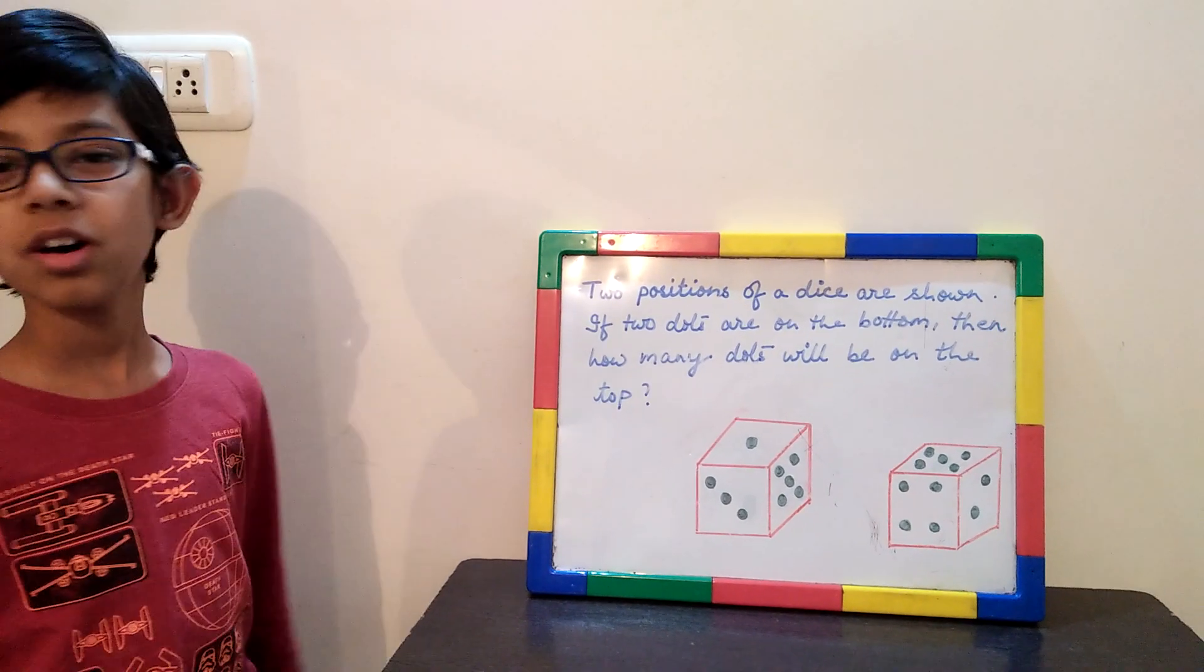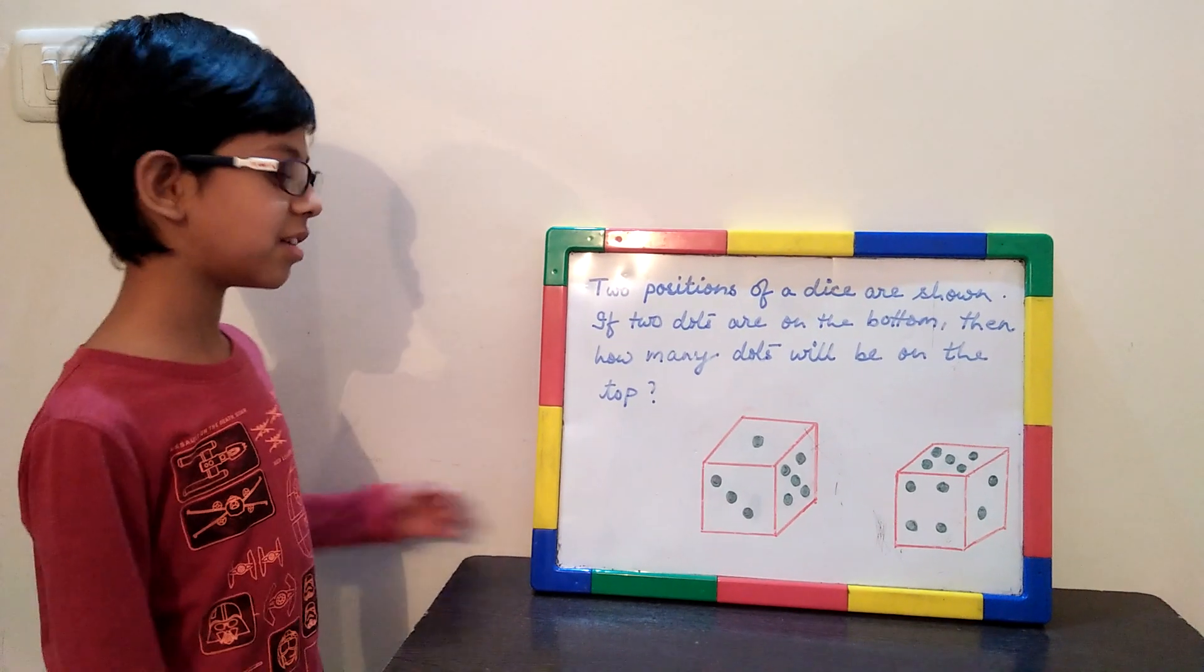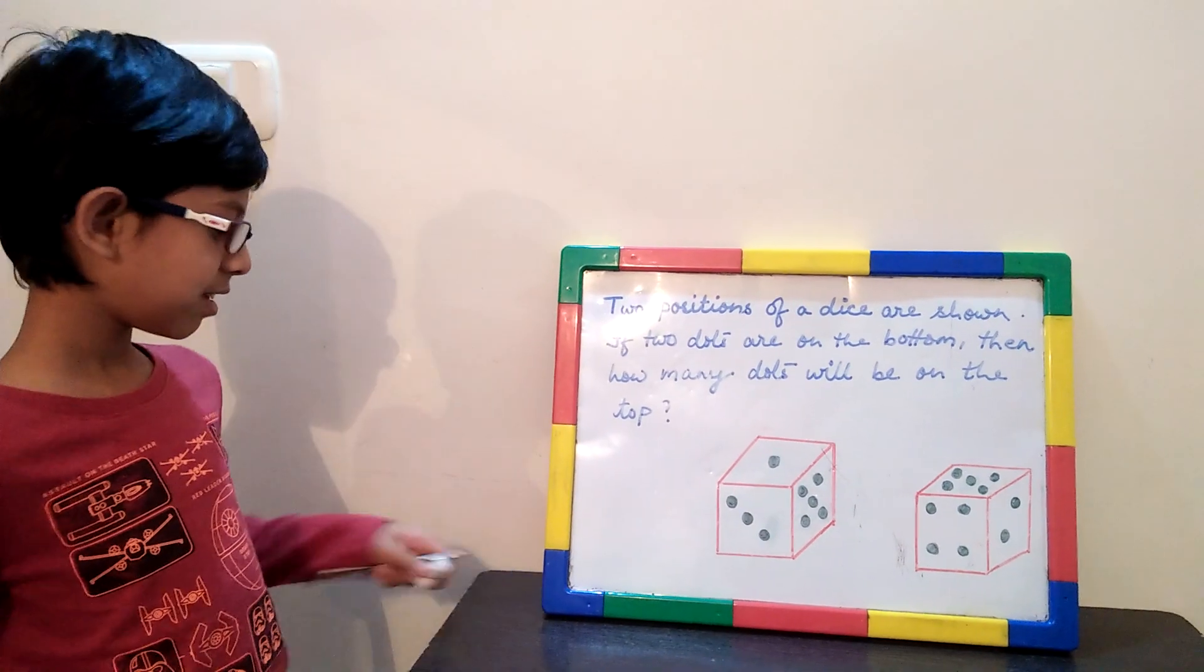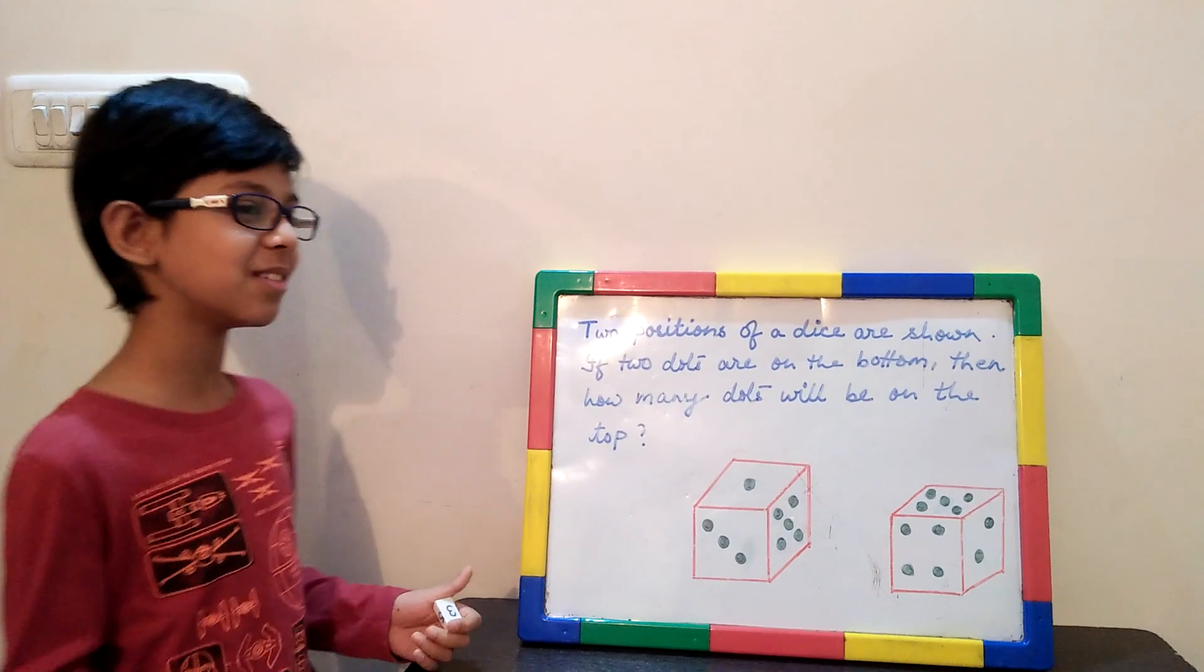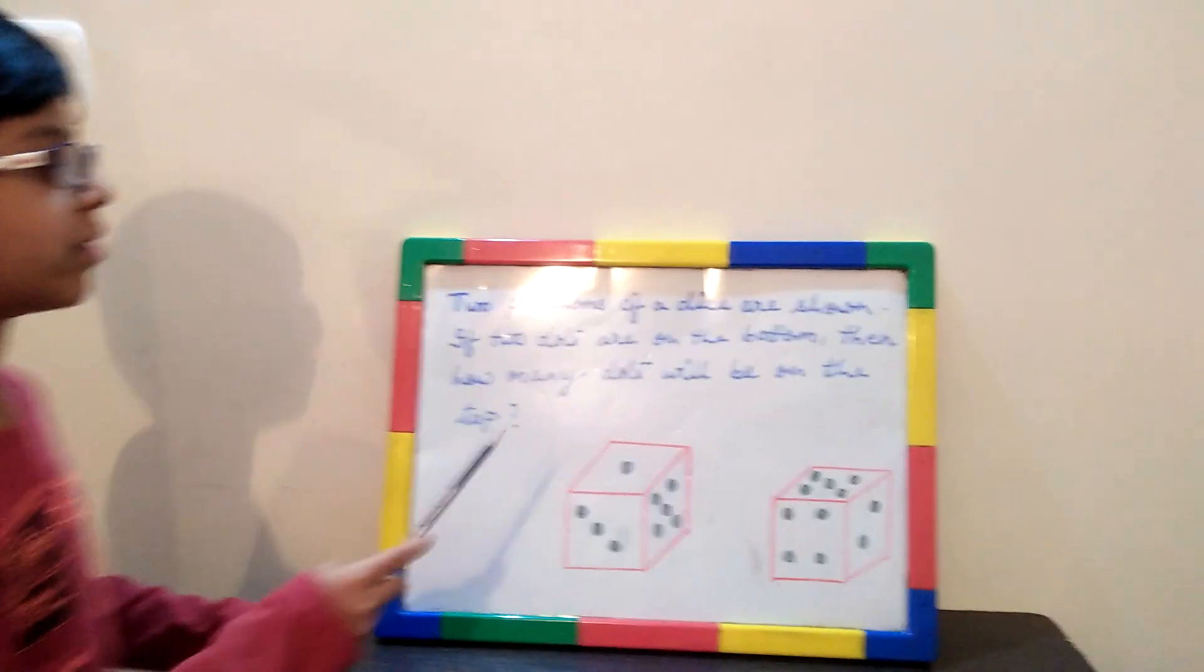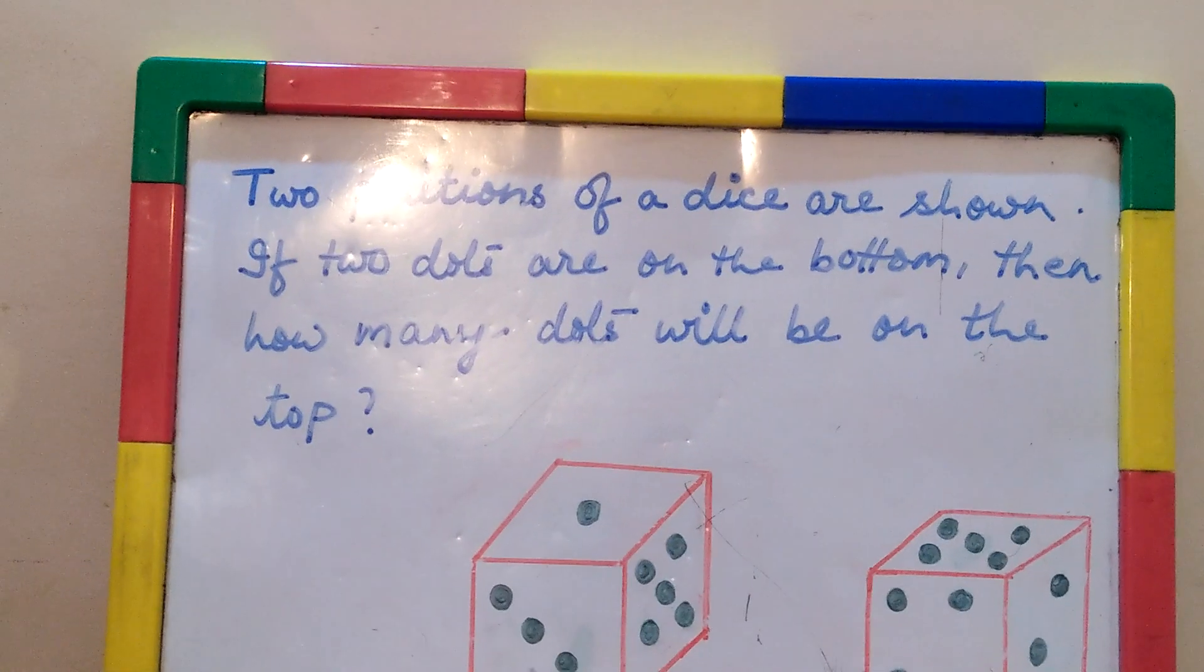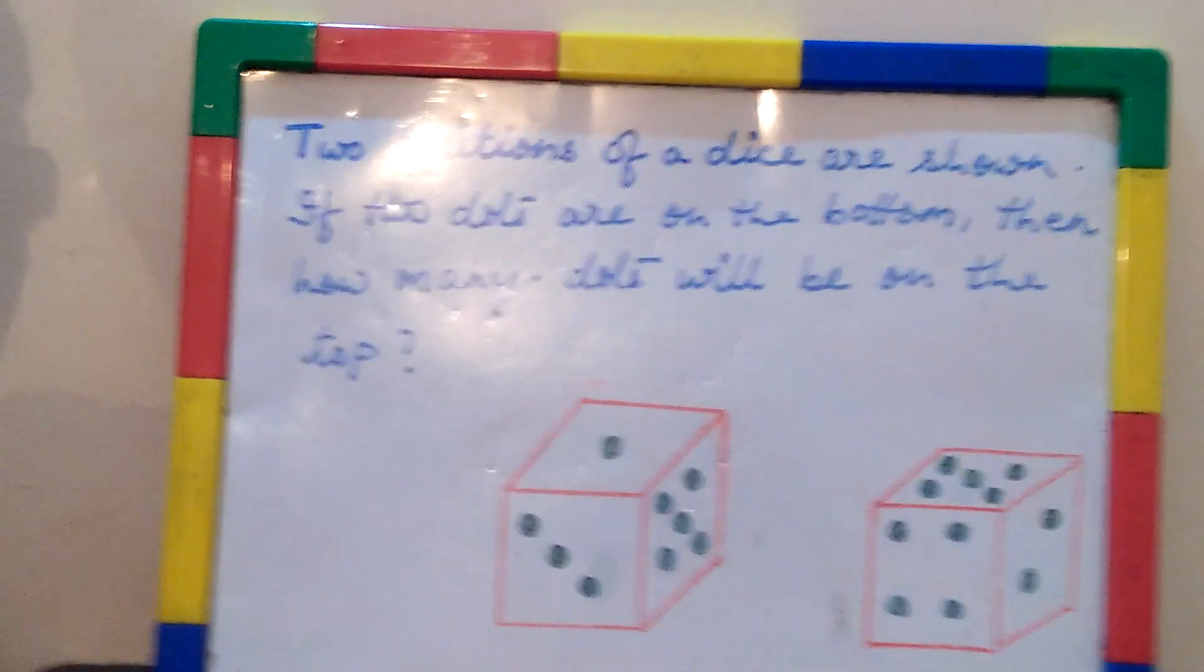All you need for this question is you don't even need any proper logic. All you need is, I've kept it back here, pencil, eraser. Yeah, in the exam we have those two things. How do you do these questions? Two positions of a dice are shown. If two dots are on the bottom over here, how many dots would be on the top where the one is?